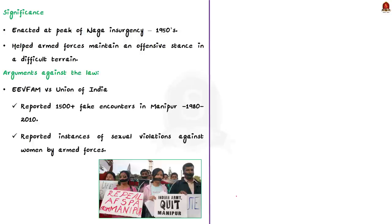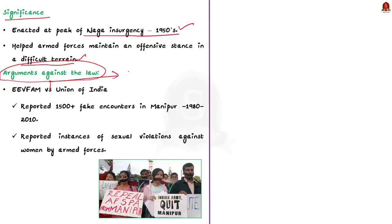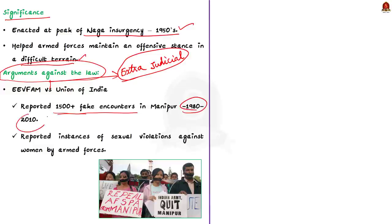The act was enacted at an important time when the Naga insurgency was at its peak in the 1950s. It has aided the armed forces in proactively maintaining an offensive stance against hostile insurgents in difficult terrain. However, AFSPA is seen as draconian legislation by the northeastern people. The famous EEVFAM versus Union of India case contended that there were 1,500+ fake encounters in Manipur between 1980 and 2010 because of the AFSPA. There have also been reported instances of sexual violations against women by the armed forces.